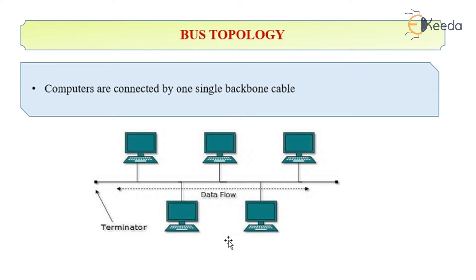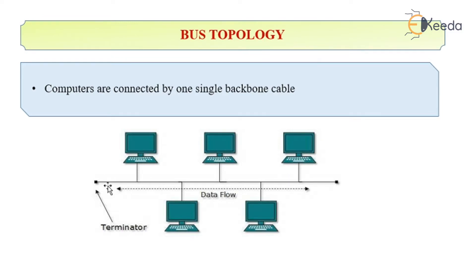The bus topology. In this topology, as you can see, all the computers are connected through a common cable which is also called the backbone cable. The problem with this kind of topology is that if the backbone fails, the communication between the various computers will be disrupted.